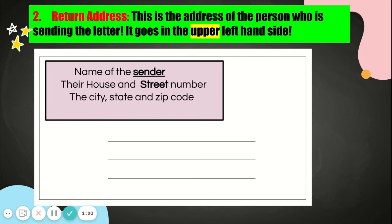Let's go over it one more time. It will have the sender's name, their house and street number, the city, state, and zip code.